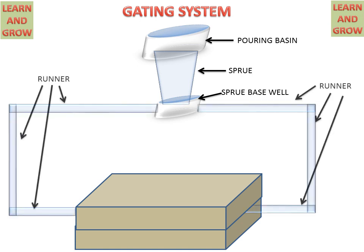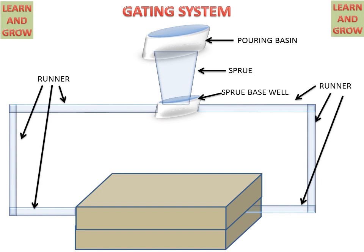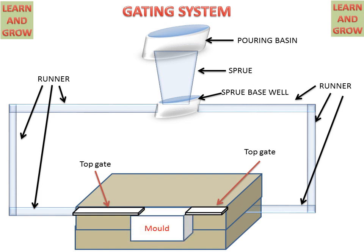The sprue base well is connected to the runners. These runners supply molten metal to the cavity, and ahead of the runners there is a gate system which provides molten metal to the mold cavity. This is called the top gate because it is in the uppermost section, on top of the cope.